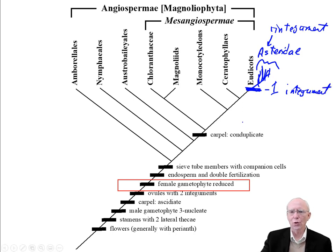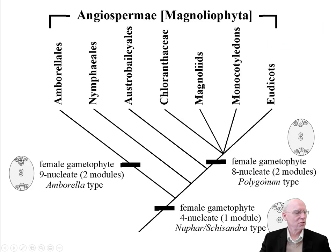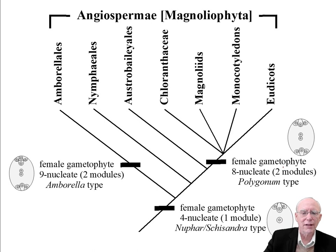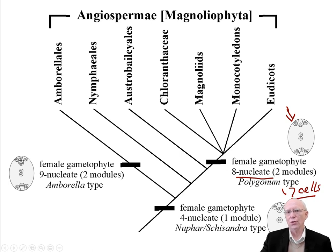Let's go on and talk about the female gametophyte and how reduced it is. We find very reduced gametophytes in the angiosperms. The whole gametophyte is reduced to eight nuclei and seven cells. Just as the male gametophyte is reduced to three cells, the female gametophyte is reduced to these seven cells, and that's what we'll look at in the next few slides.